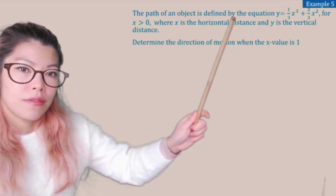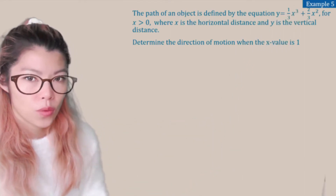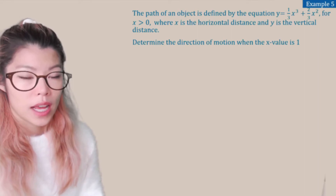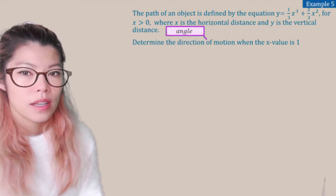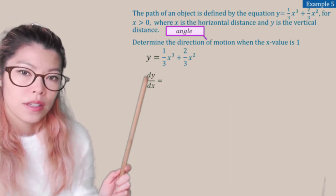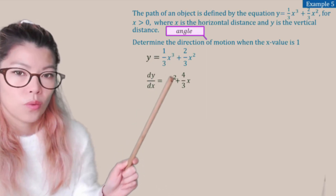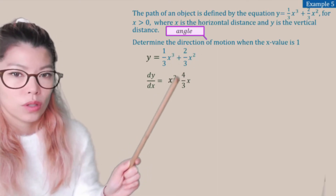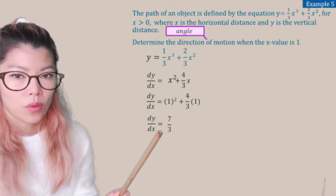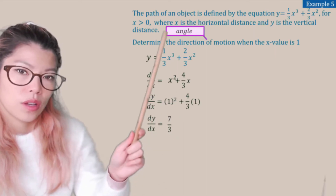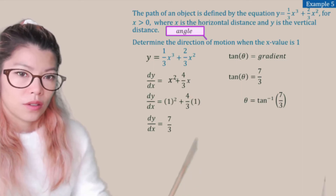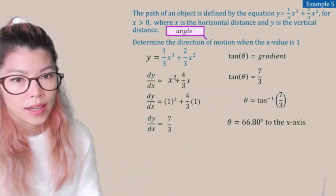Example 5: the path of an object is defined by y = (1/3)x³ + (2/3)x², for x greater than 0, where x is horizontal distance and y is vertical distance. Determine the direction of motion when x equals 1. Direction means the angle. Let's find the derivative first: bringing the 3 down gives x², and bringing the 2 down gives (4/3)x. So the derivative at x = 1 equals 7/3. To find the angle, we take tan inverse of the gradient: tan⁻¹(7/3) gives approximately 66.8 degrees to the x-axis.